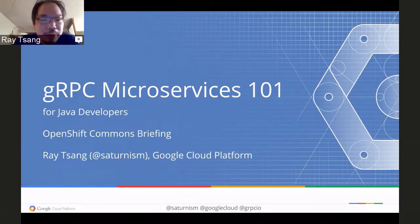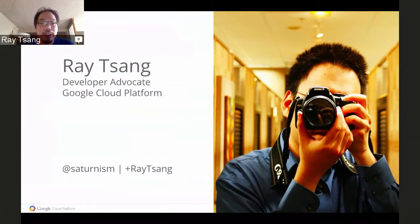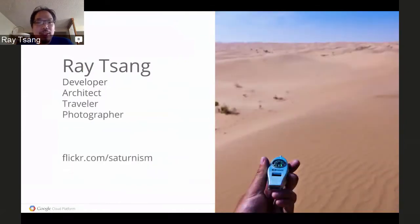Thank you for having me. I'll be happy to present on this OpenShift Commons briefing. My name is Ray. I am a developer advocate for the Google Cloud Platform, and what that means is I love to bring Google's greatest and latest technology to developers over the world. But I also like to get your thoughts, your feedback, and how you're using our technology today, whether it's the cloud or open source projects. If you have any thoughts, feedback, or questions, just ping me on Twitter at saturnism.